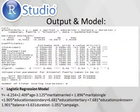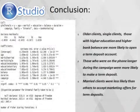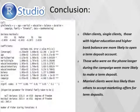This is my output. You can see my GLM and the binomial family, and these are the coefficients of the variables. I was able to plug these into the logistic regression model. My conclusion is that older clients, single clients, and those with higher education and a higher bank balance are more likely to open a term deposit account. Those who were on the phone longer during the campaign were also more likely to make a term deposit. But married clients were less likely than others to accept marketing offers for term deposit, possibly because they had to consult their spouse or because of other factors.